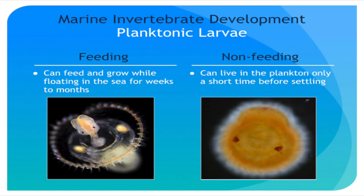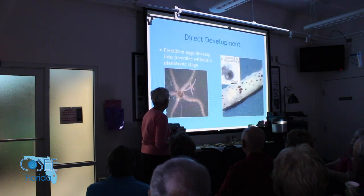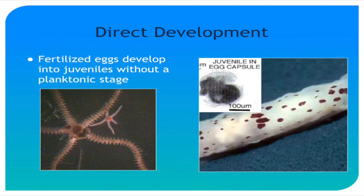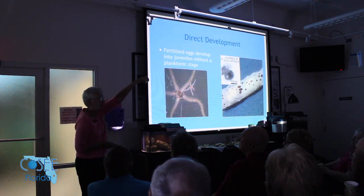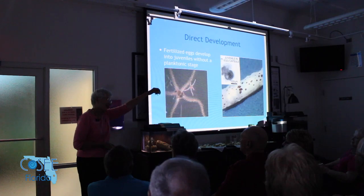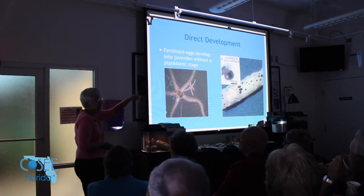Then there are non-feeding larvae that can spend only a short time in the plankton — the big yolky larvae. You can see cilia and little eye spots, but there's no gut, so they've got to settle in a few hours to a few days. Then there's direct development, where fertilized eggs develop into juveniles like the starfish there, or that's a nudibranch snail — the babies hatch out from the egg capsules as tiny replicas of the adults.